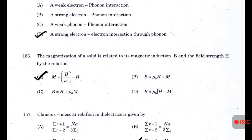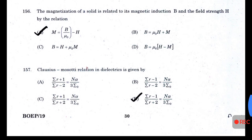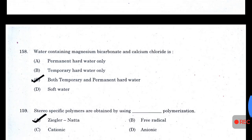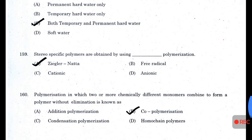An ion displaced from the lattice into an interstitial site is called a Frenkel defect. The favorable condition for superconductivity is a strong electron interaction through phonons. The Clausius-Mossotti relation for dielectrics is given by — answer D: Σ(R−1)/Σ(R+2) = Nα/(3ε₀).